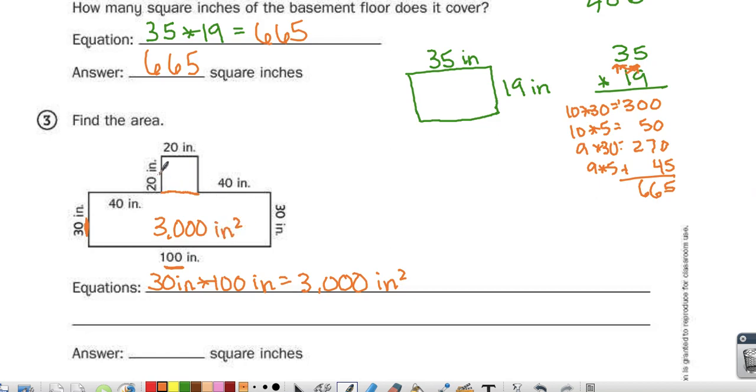And then I'd have 20 inches times 20 inches. And then 2 times 2 is 4. So that would be 400 square inches. And then I would do the 3,000 plus 400 gives me 3,400 square inches.